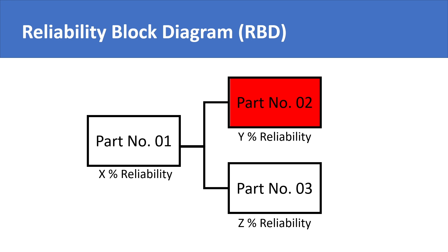Parallel configuration represents that failure of one part won't fail the system, because the parallel part will take over. Therefore, parallel parts and components in a system or machine increase the reliability of a system by adding redundancy.